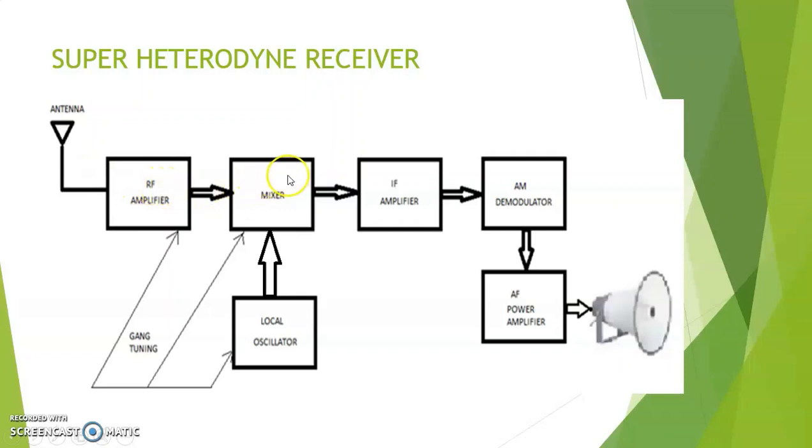This is then mixed with the frequencies generated by a local oscillator. The local oscillator produces signal of frequency F0. The mixer mixes the signal coming from the RF amplifier called as Fi and the mixer will generate four frequencies: F0, Fi, F0 plus Fi and F0 minus Fi. Out of which only F0 minus Fi is selected and that is given to the IF amplifier. F0 minus Fi is made standard equal to 455 kHz in all the Superheterodyne receivers worldwide.